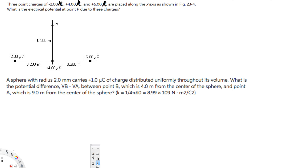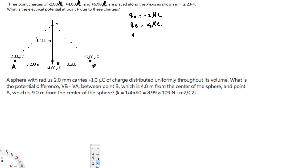What's going on guys, let's do this problem. The question is asking: three point charges of negative two microcoulombs, plus four microcoulombs, and six microcoulombs are placed along the x-axis as shown in the picture. What is the electrical potential at P due to these charges? So let's label them: Q_A equals negative two microcoulombs, Q_B equals four microcoulombs, and Q_C equals six microcoulombs.